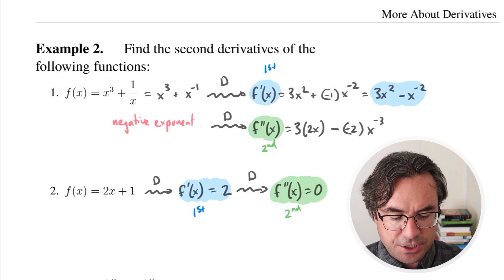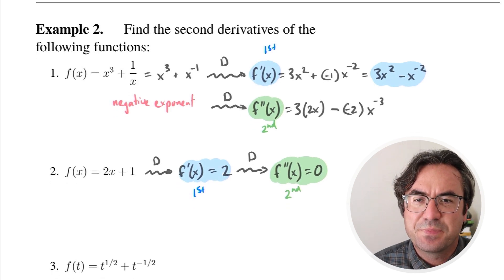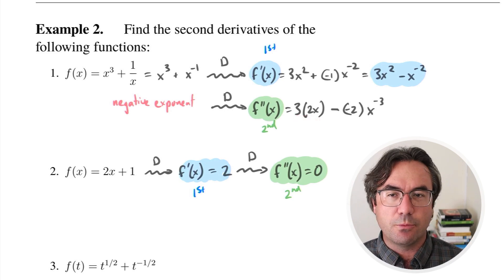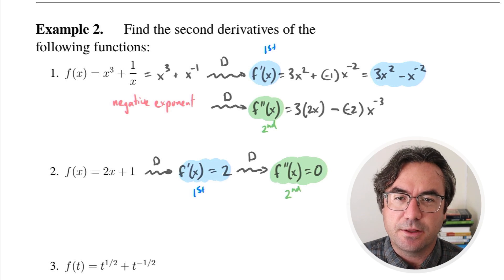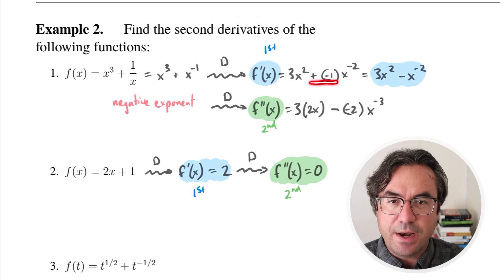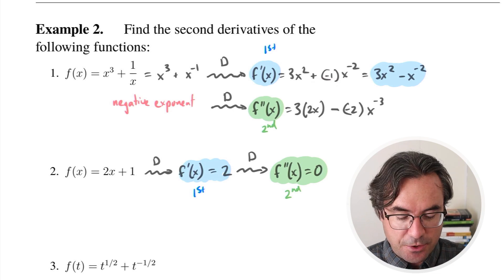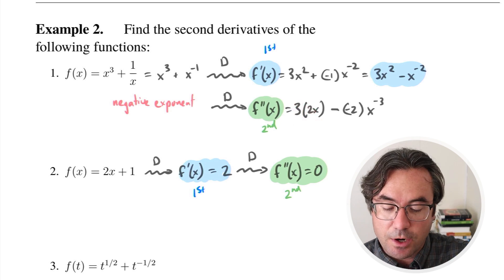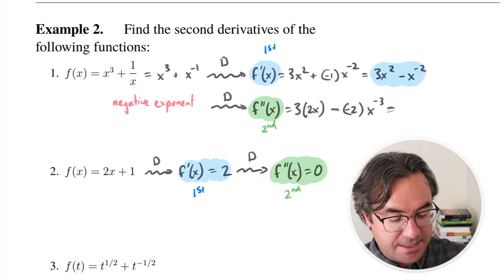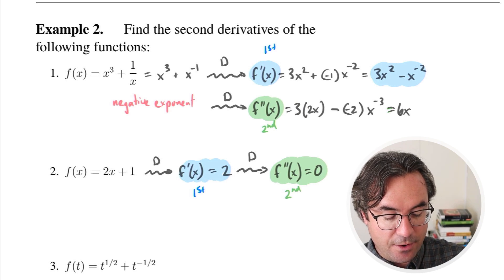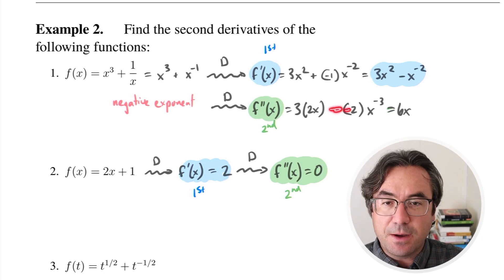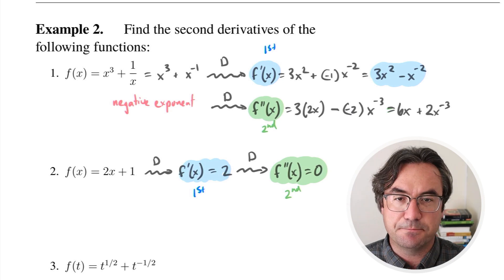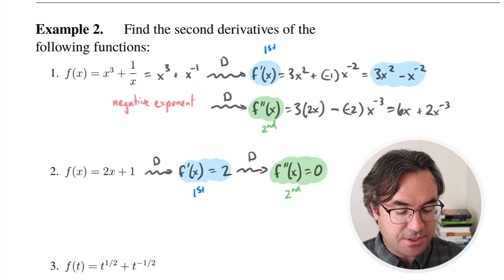Probably helpful to simplify that down. You would probably just multiply the 3 and the 2 together right away, so we end up with 6x. And over here, this would be a double negative, so that becomes plus — plus 2x raised to the negative 3. And we've got our second derivative.